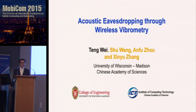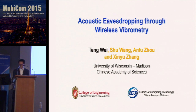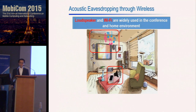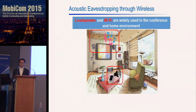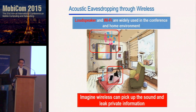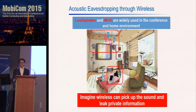Good morning everyone. My name is Tan and today I will introduce my paper on acoustic eavesdropping through wireless vibrometry. Nowadays loudspeakers are widely used in conference and infotainment systems, and our living environment is surrounded by all kinds of wireless signals. Imagine if wireless radios could pick out sound from loudspeakers — your neighbor may know what TV program you are watching, or more seriously, your cell phone call may be eavesdropped by a nearby wireless sniffer.